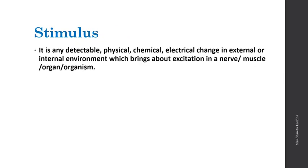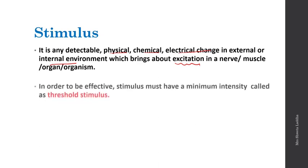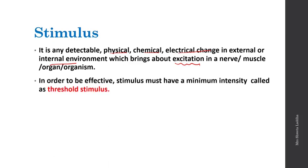Stimulus is any detectable physical, chemical, or electrical change from the external or internal environment of an organism that causes excitation in the nerve or muscle — that is, causes action potential in a muscle, organ, or the overall organism. This detectable change resulting in excitation is called a stimulus. To be effective, a stimulus must have a minimum intensity called the threshold stimulus — the minimum stimulus necessary to carry out conduction of an impulse.